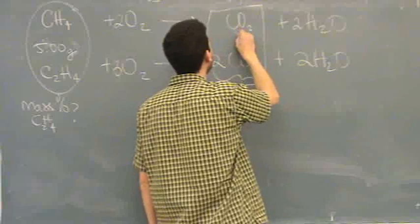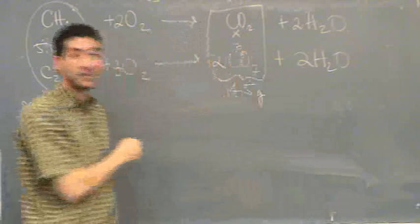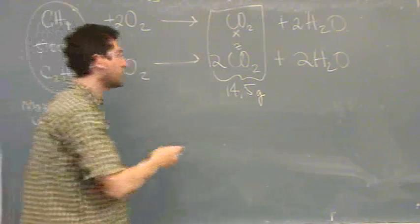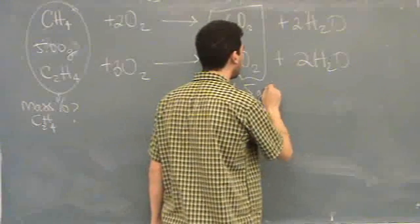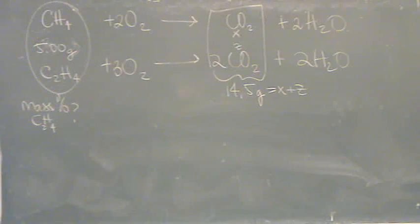Okay, so they say this is mass. There's x grams of the top one, and z grams of the bottom one. They add up to 14.5. Kind of like that. They both contribute so many grams to it, a total of 14.5. It doesn't tell you about the water.